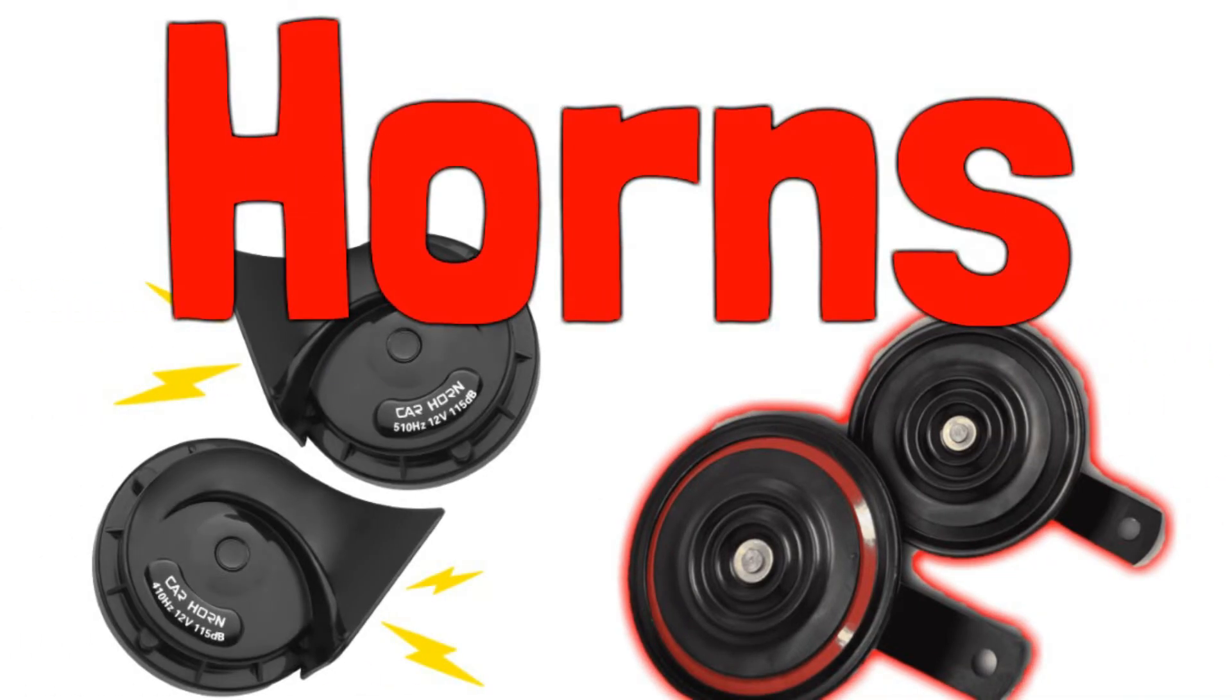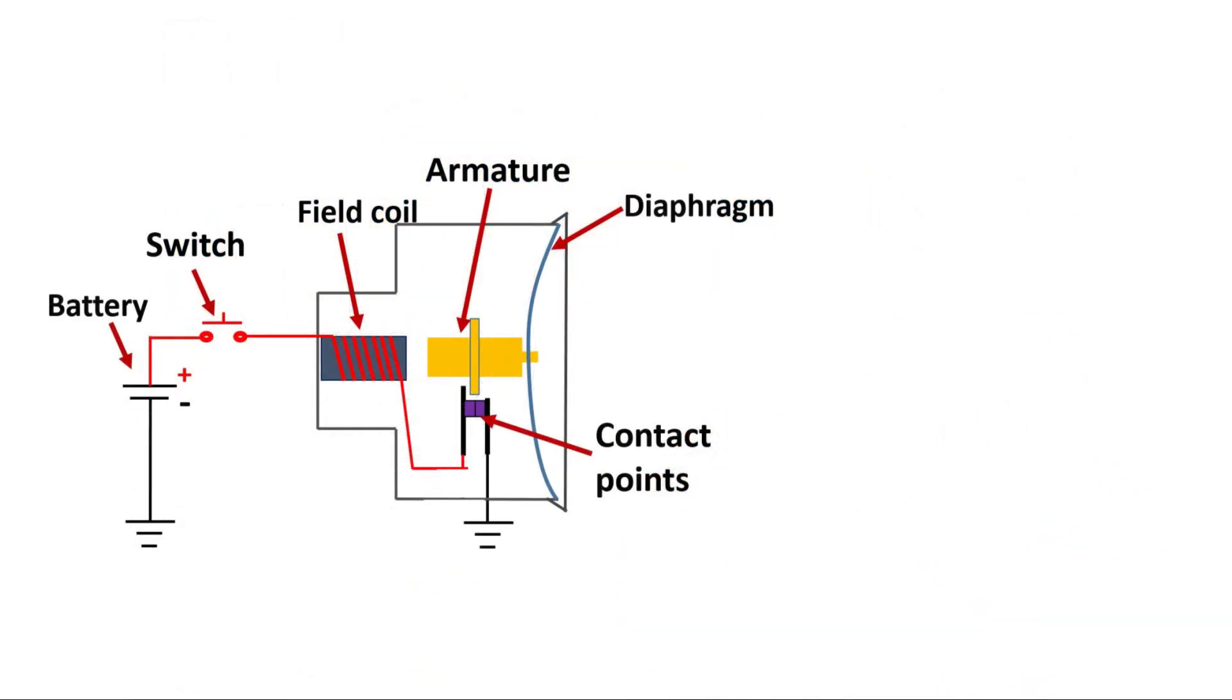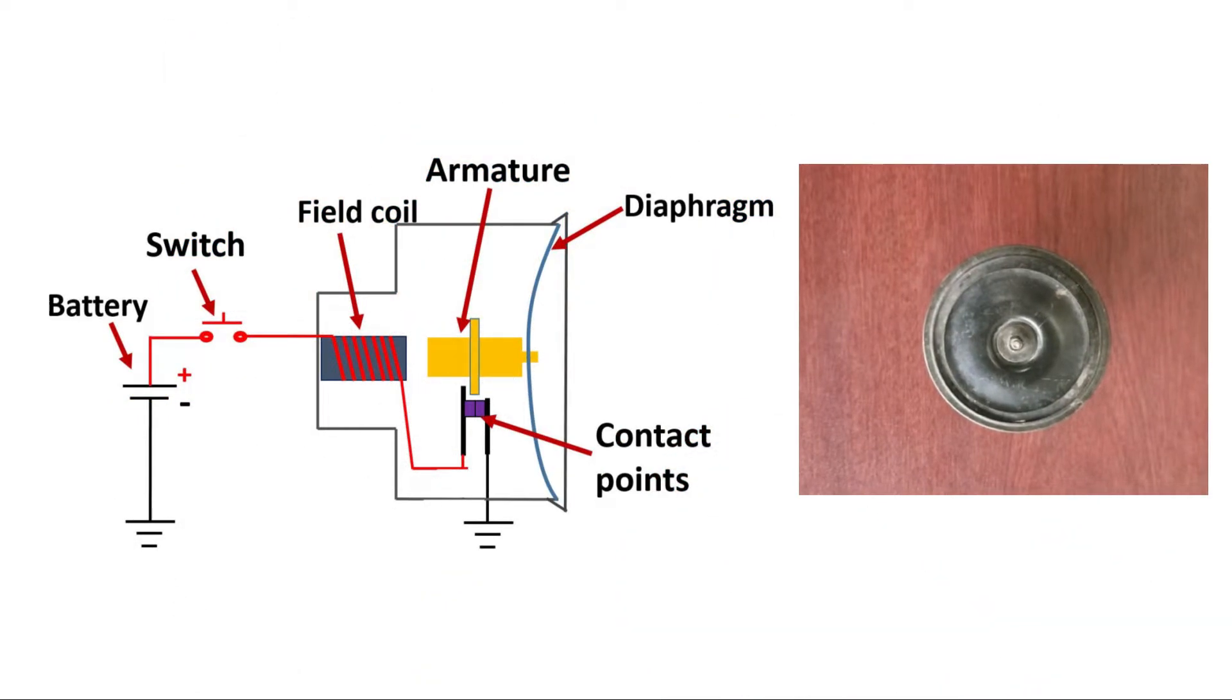Horns. The automotive electrical horn operates on an electromagnetic principle that vibrates a diaphragm to produce a warning signal.